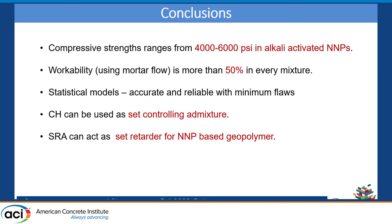In conclusion: the compressive strength of all alkali-activated mortars ranged from 4,000 to 6,000 psi. The workability of most mixtures was greater than 50%. The statistical models were accurate and reliable with minimum error. Calcium hydroxide can be used as a set-controlling admixture, and shrinkage reducing admixture (SRA) can act as a set retarder for geopolymer materials.